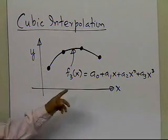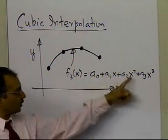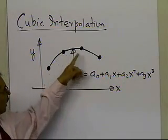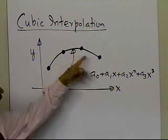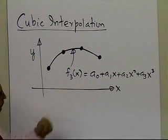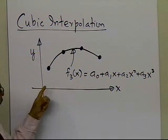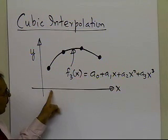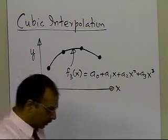So the bottom line about cubic interpolation is to find out what these four coefficients are, and those four coefficients will be found from the values at these four data points. Then you can find the value of the interpolant at any point between the lowest and highest value of x for those four data points. Let's go ahead and take an example and see how this all works.